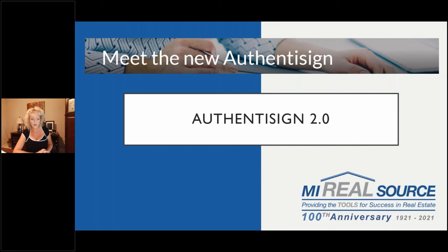We're going to take you through what you need to know about Authenticine 2.0. They recently released a new user interface - 60% faster. It's got some new, really cool features. There's stuff in here I wanted to do for so long that we now can do, like changing names on the fly. You can edit how you want your signatures lined up, and again, it's so much faster. We're going to take you through all of that today, as well as some time-saving tips and techniques.